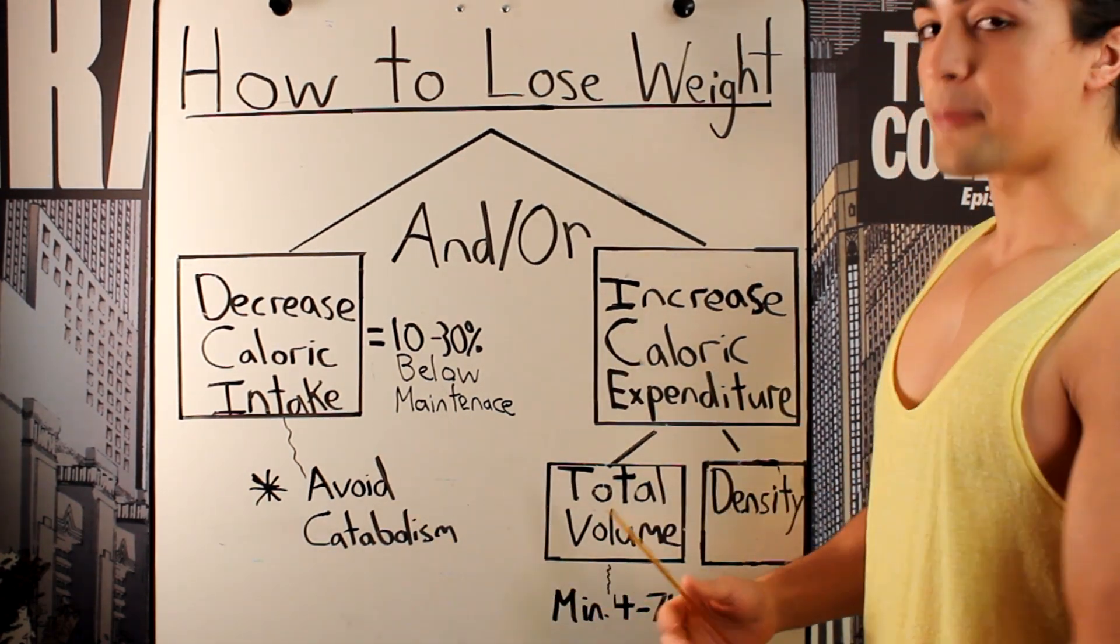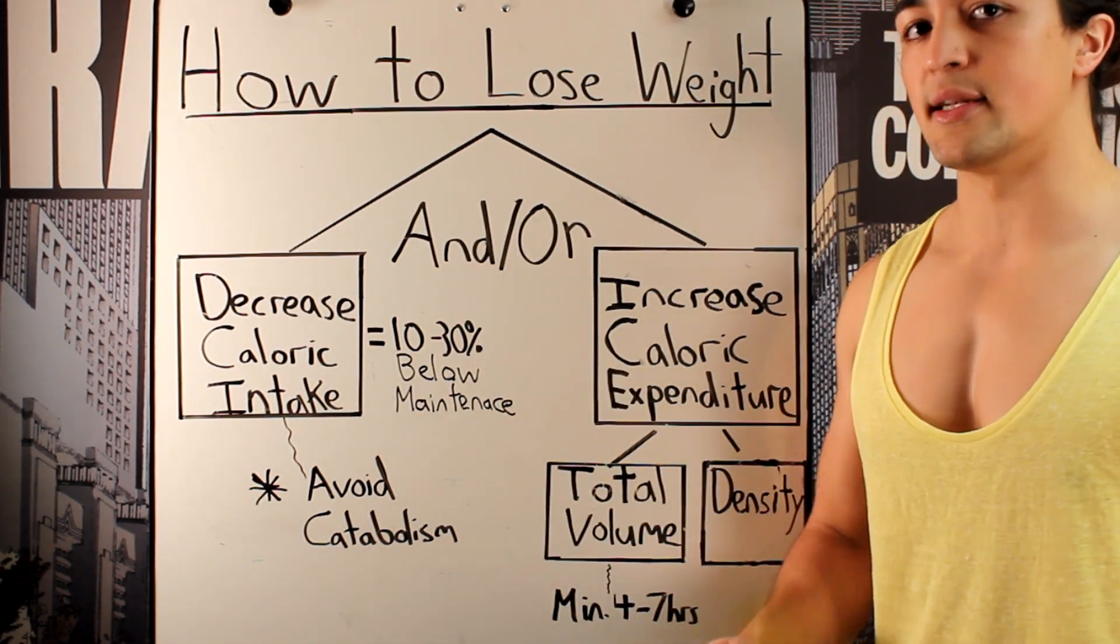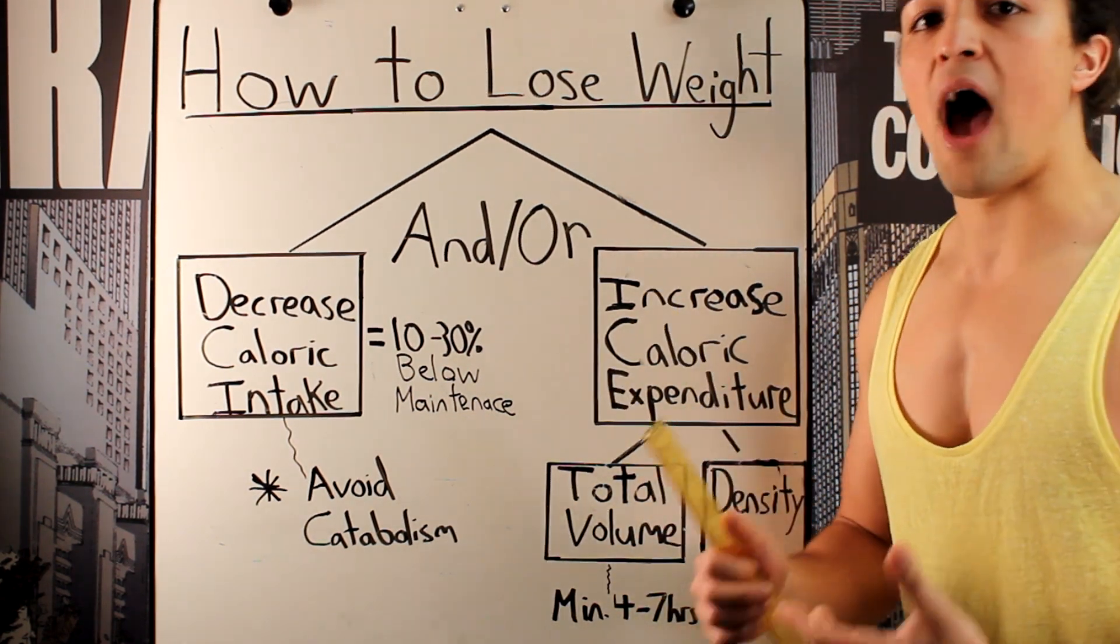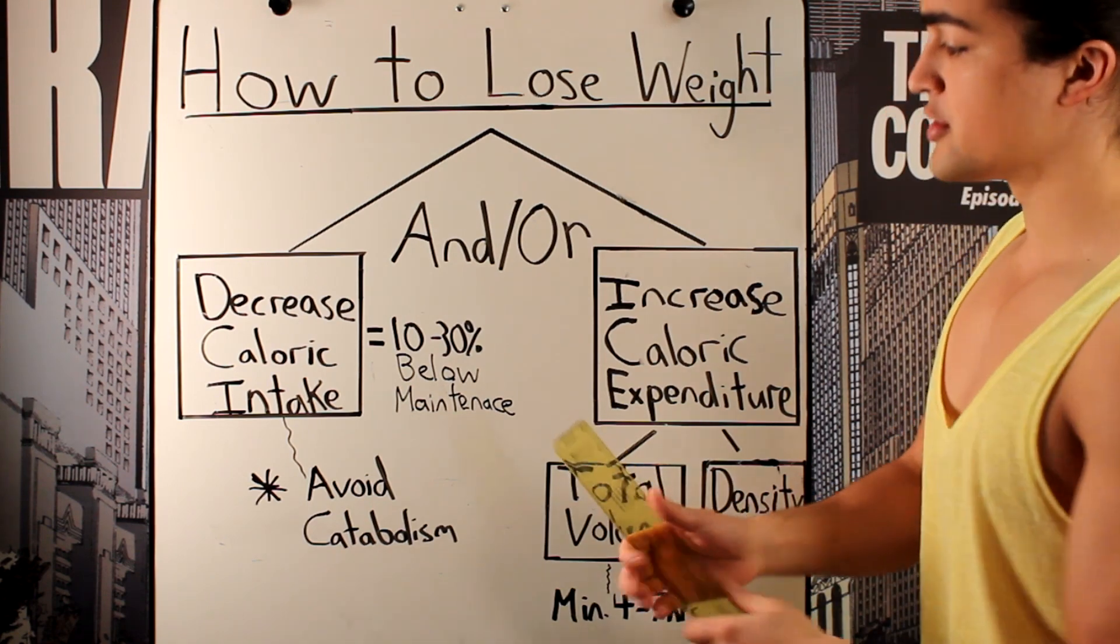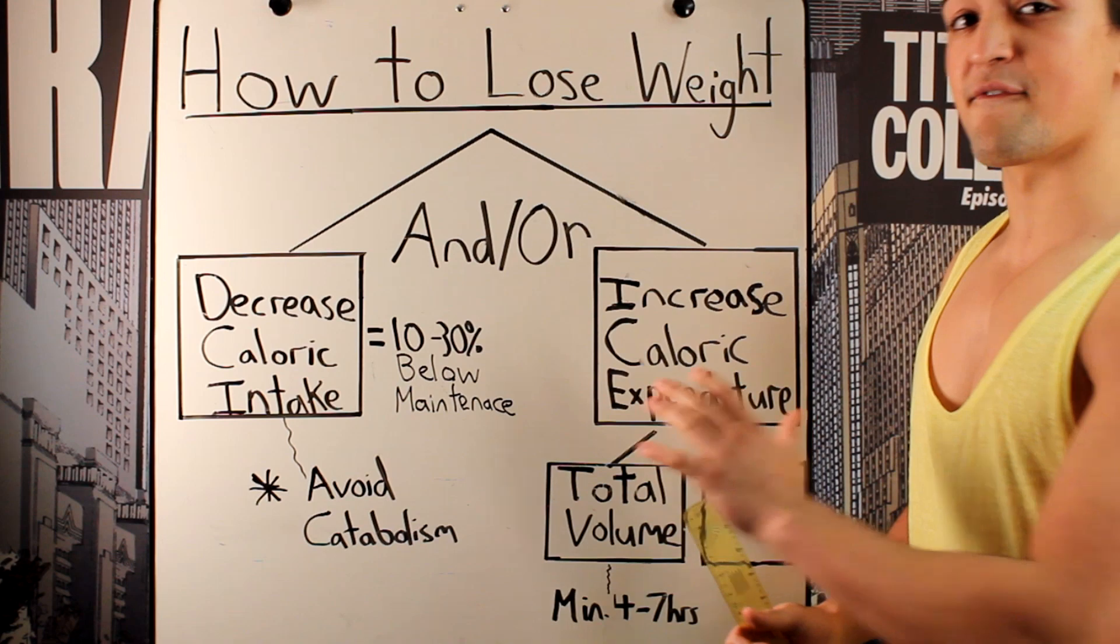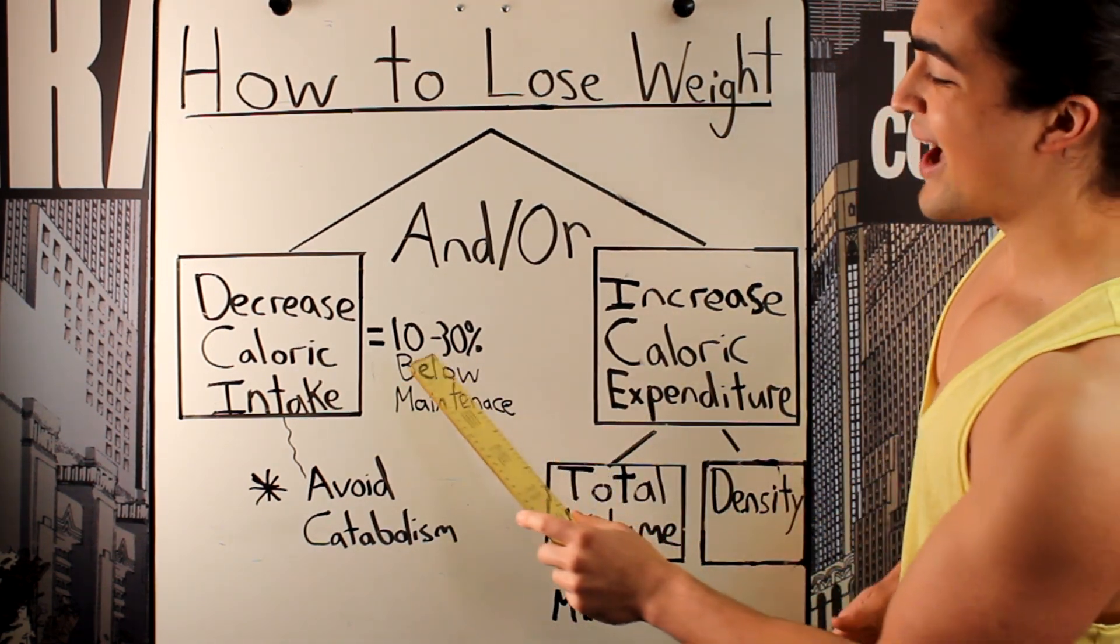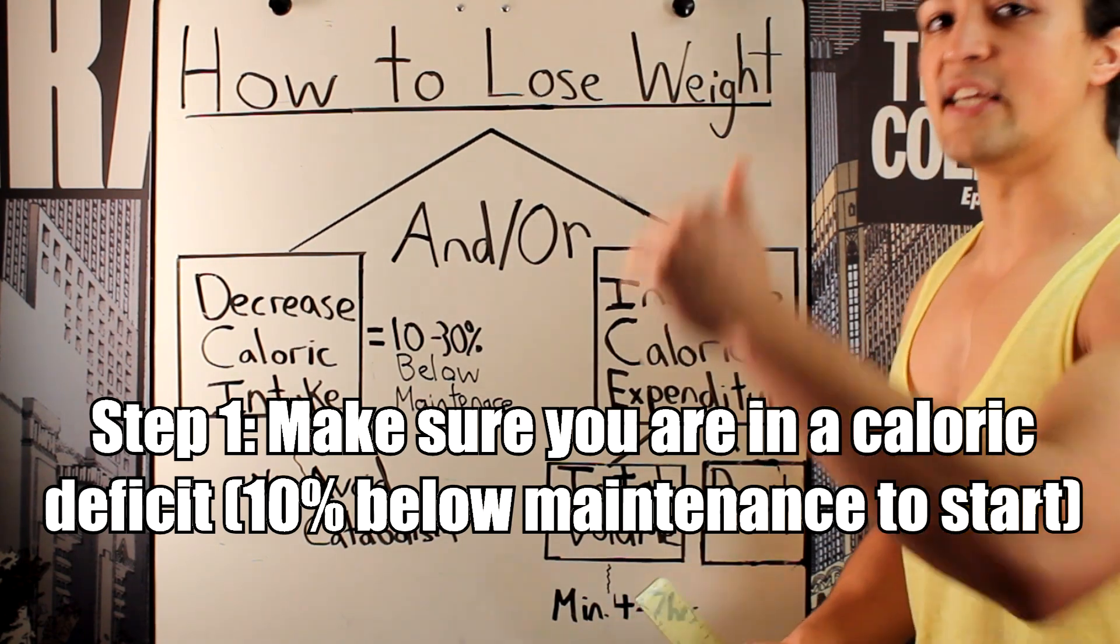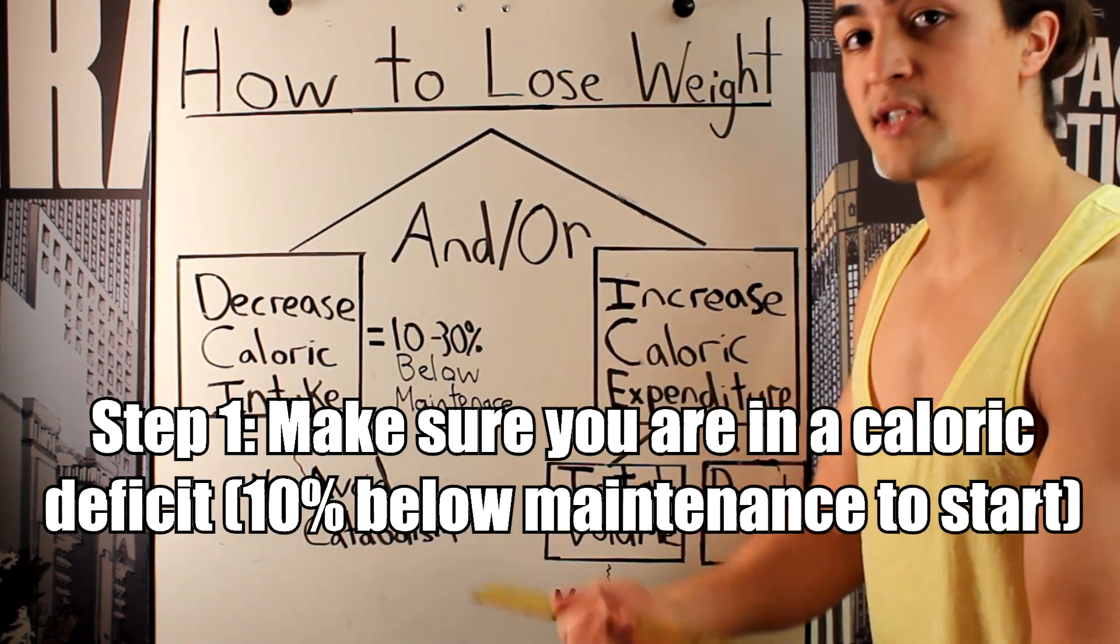Let's talk about the first option. Option A, decrease your caloric intake. This is what most guys will do initially. The question then becomes, how should I lower my calories or by how much? I usually recommend between 10 to 30% below maintenance. Obviously, when you're first starting out, I would only recommend a slight dip, perhaps 10%. As you progress with your fat loss, you have to decrease your calories slowly over time.